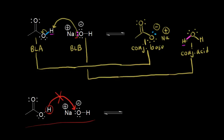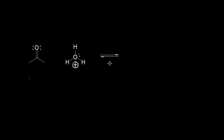Let's do one more acid-base mechanism for some extra practice. On the left we have acetone, and on the right we have the hydronium ion, H3O+. The hydronium ion is going to function as our Bronsted-Lowry acid — it's going to donate a proton to acetone, which is going to be our Bronsted-Lowry base. When you're drawing an acid-base mechanism, your curved arrows show the movement of electrons. So a lone pair of electrons on the oxygen of acetone could take this proton and leave these electrons behind on that oxygen.